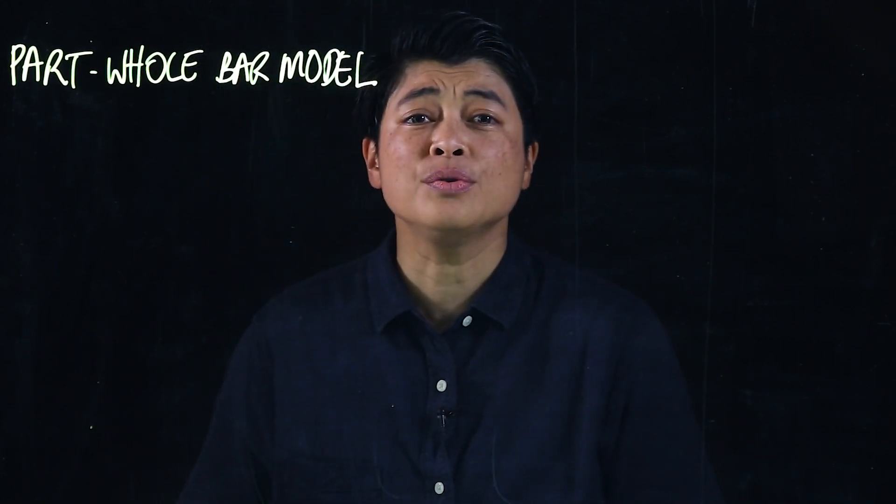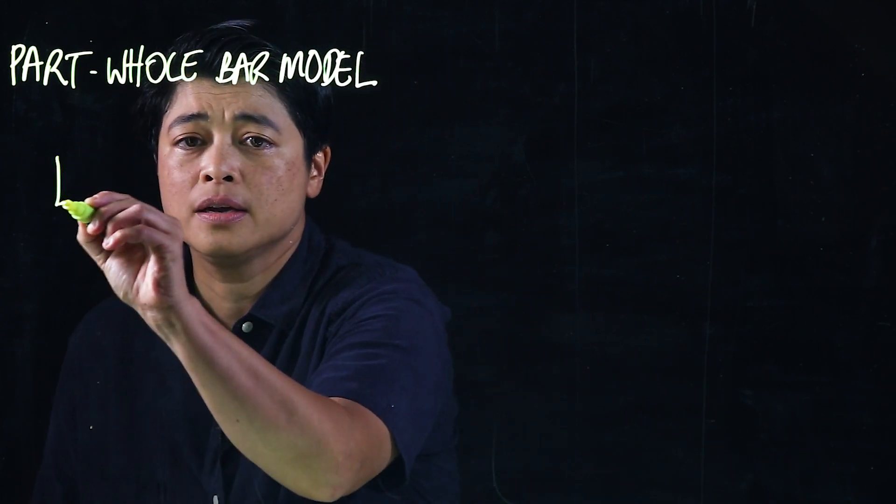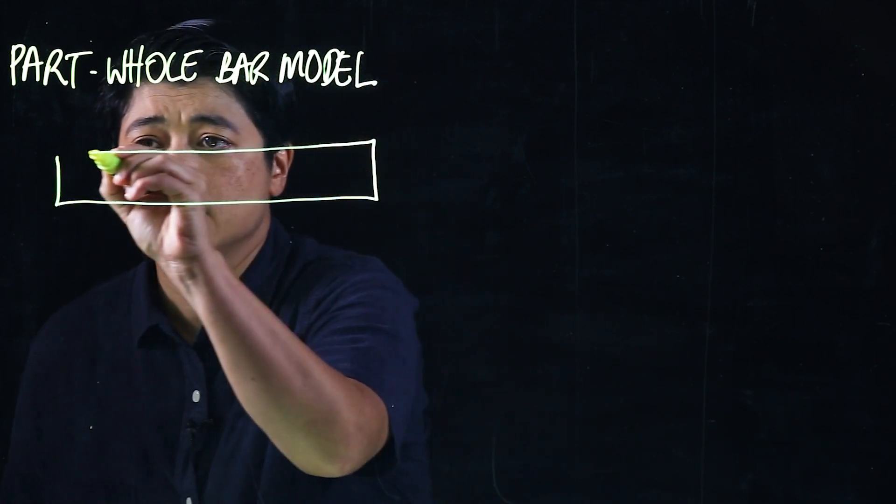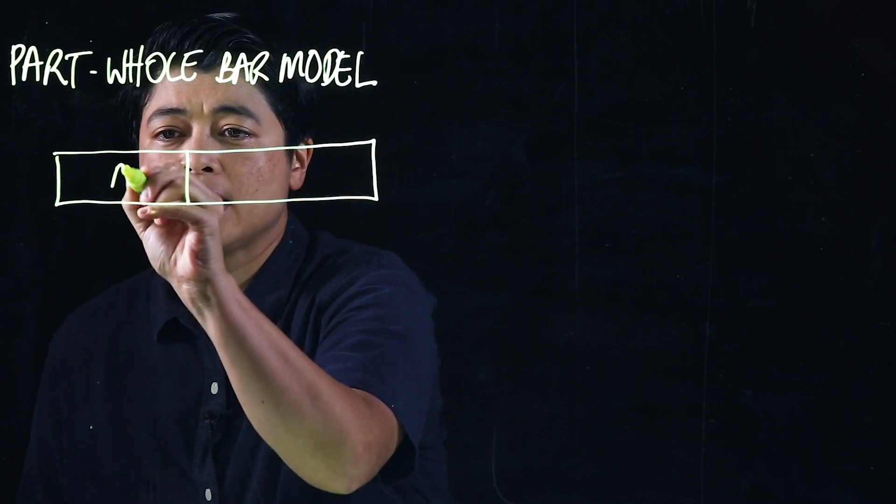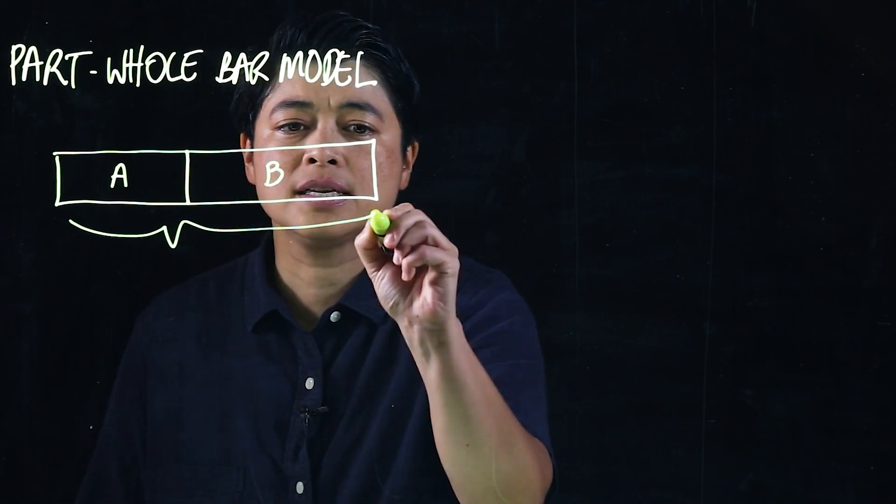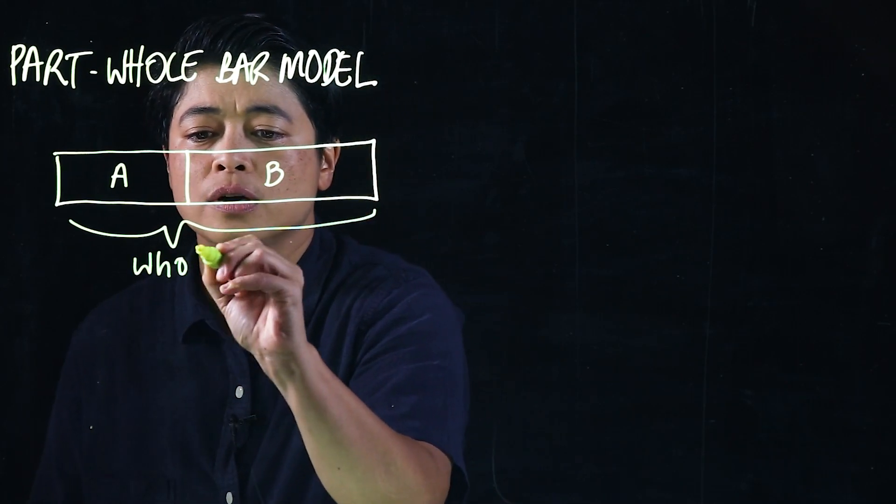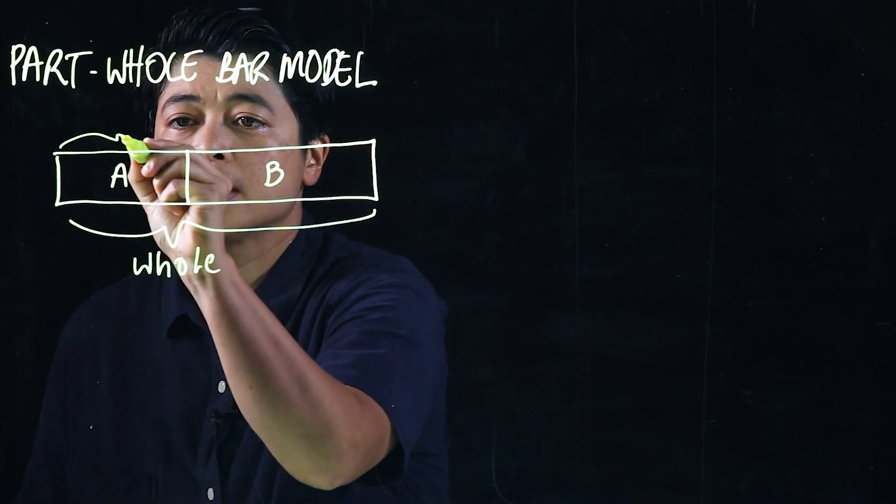In essence there's only one way of drawing it. The drawing is a single bar. This is part A, this is part B, and this is the whole. That's why it's called part-whole.